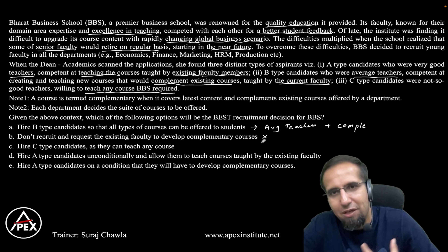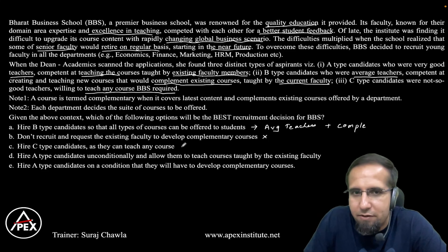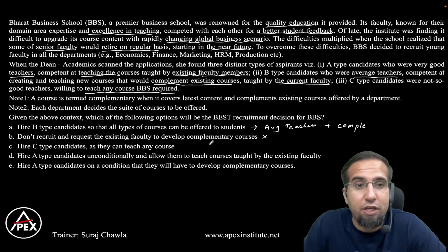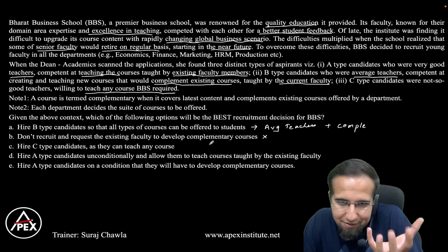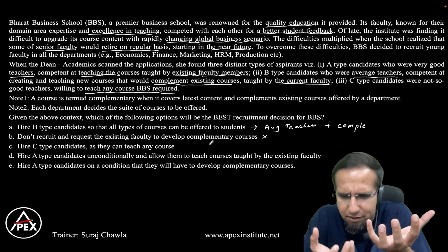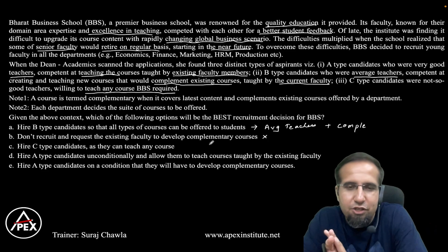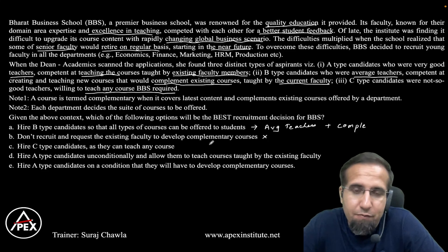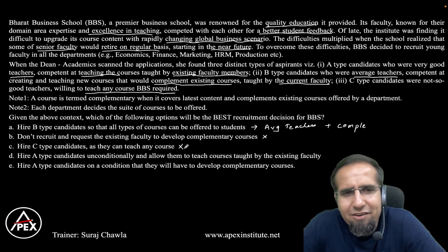Option C: hire Type C candidates as they can teach any course. The problem here is that teaching quality will be affected — Type C candidates are not-so-good teachers. If I have existing faculty with great student feedback and bring in Type C faculty who are not good at teaching, there will be a clear disparity in quality in the eyes of students, leading to bad or mixed feedback, which will definitely affect the institute. So option C is definitely not the answer.